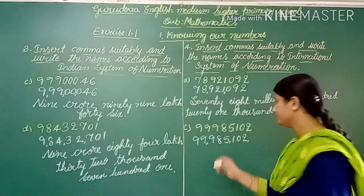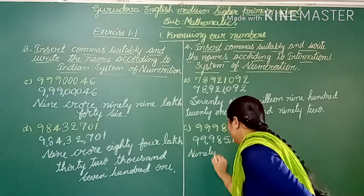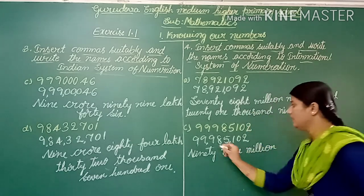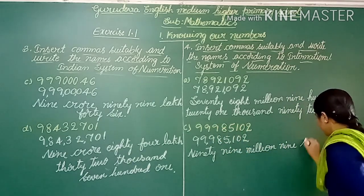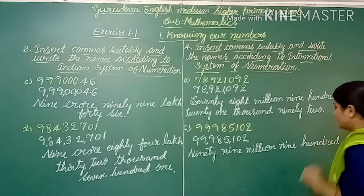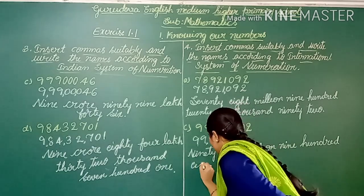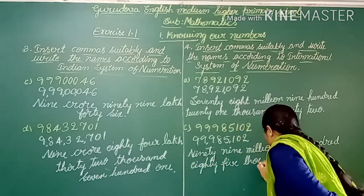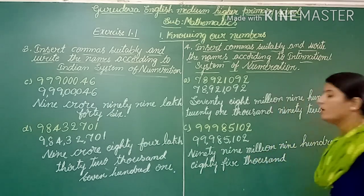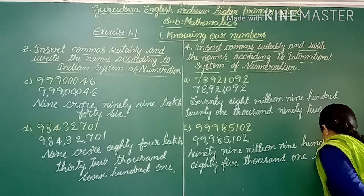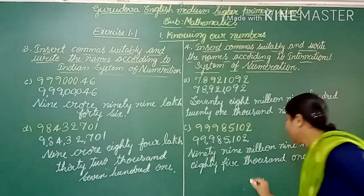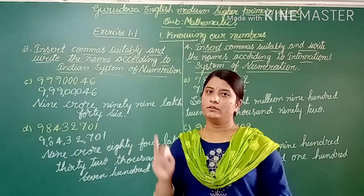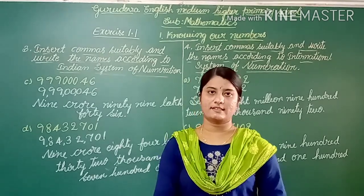Another example: the number 99,985,102. Place commas for every three digits according to the international system. It reads as 99 million 985 thousands 100. Up to here I have completed exercise 1.1. We will see the next concept in the next class. Thank you.